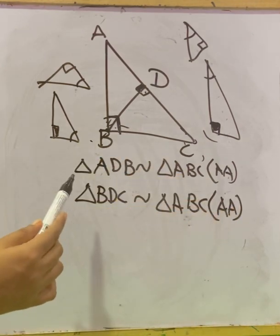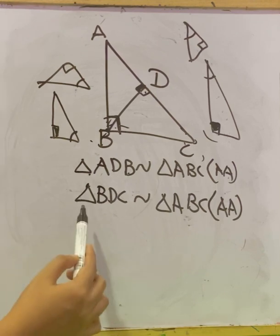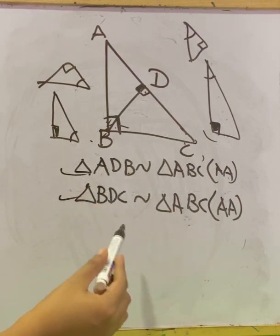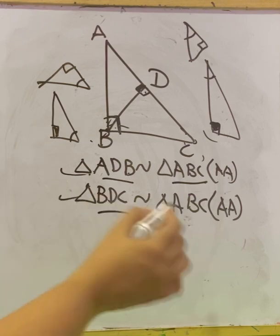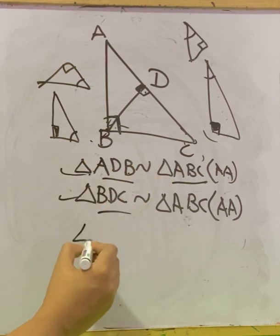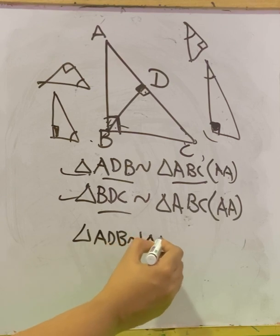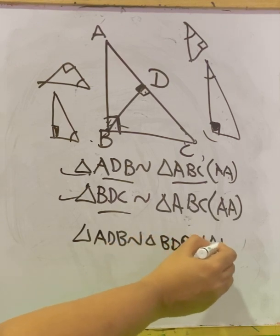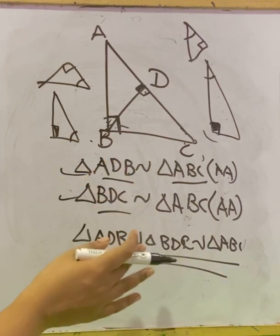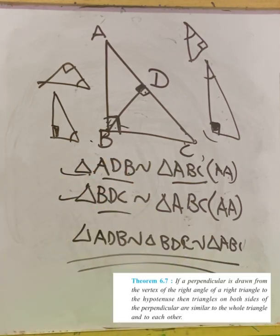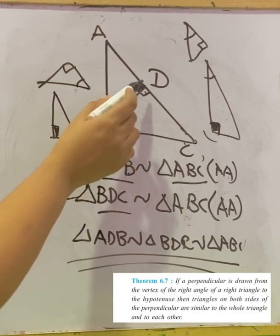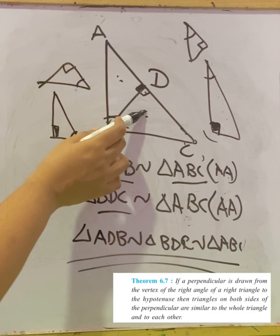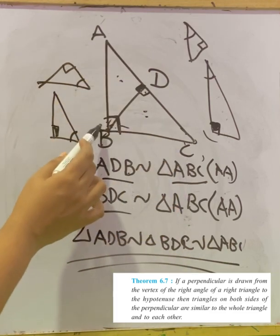Now comparing both results, we have triangle ADB similar to ABC, and triangle BDC similar to ABC. So from these two steps we can write that all three triangles are similar to each other: triangle ADB ~ triangle BDC ~ triangle ABC. This is what Theorem 6.7 states — if a perpendicular is drawn from the vertex of the right angle of a right triangle to the hypotenuse, then the triangles on both sides of the perpendicular are similar to the whole triangle and to each other.